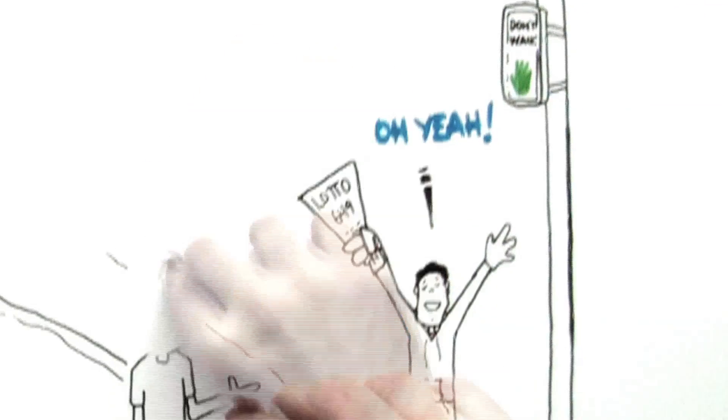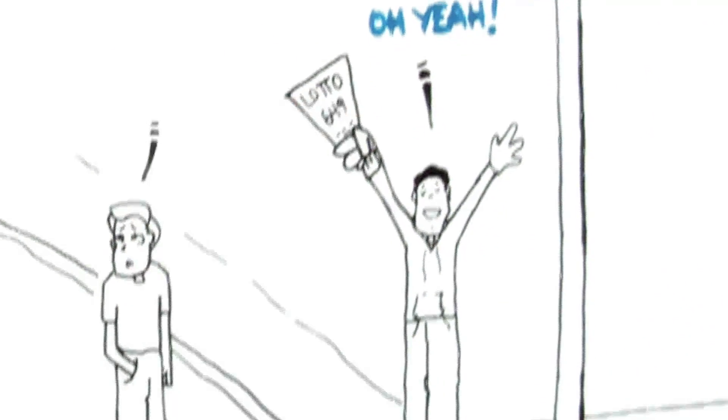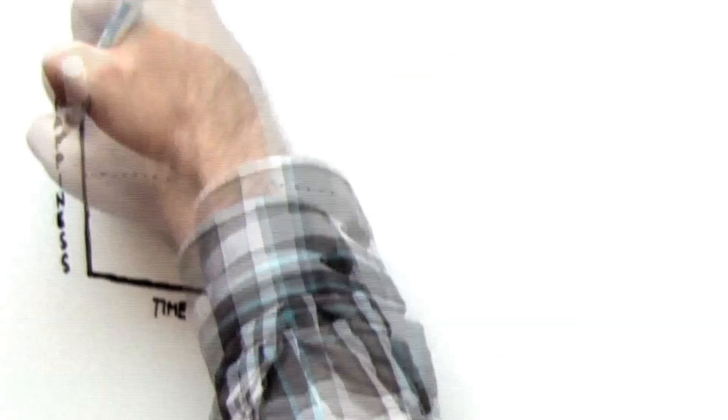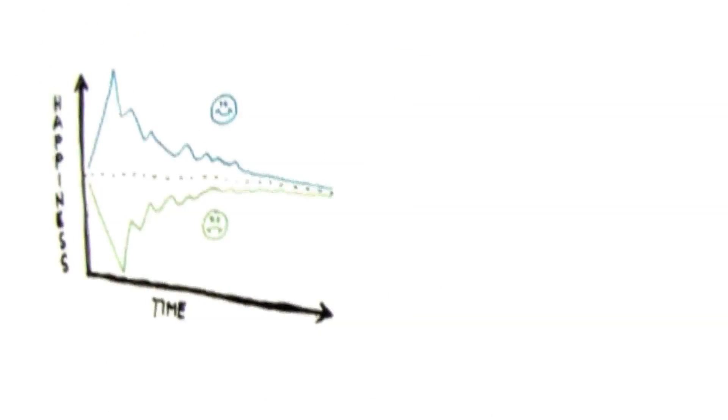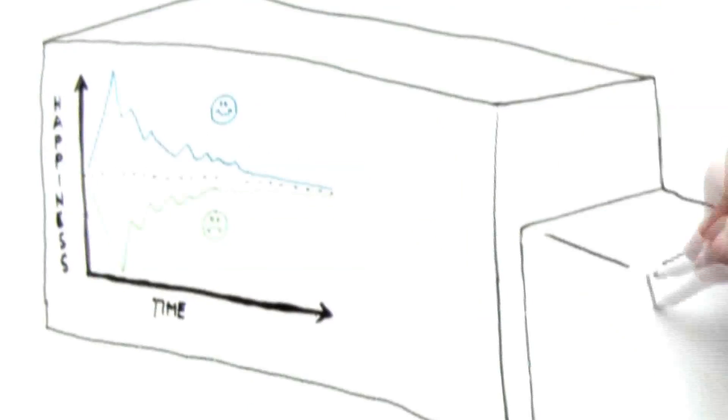As you'd expect, after people win the lottery, they get really happy. And after people become paralyzed, they get really sad. But what's fascinating is that with time, people go back to being about as happy as they were before.